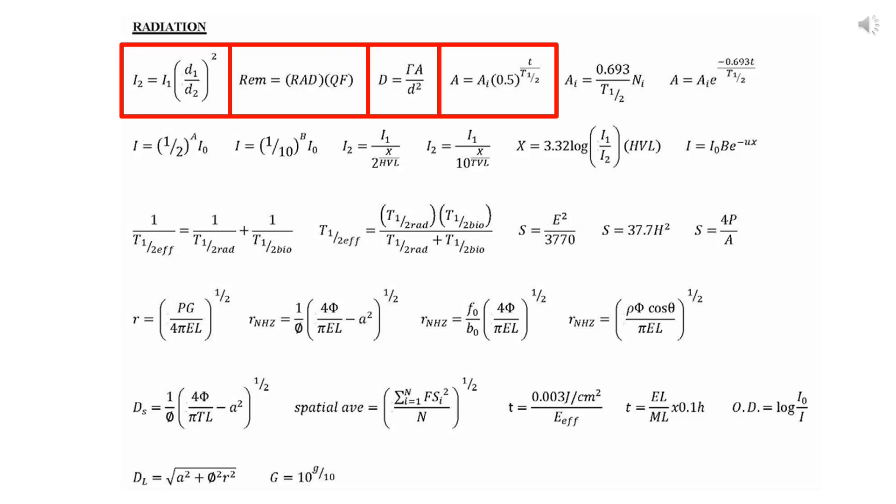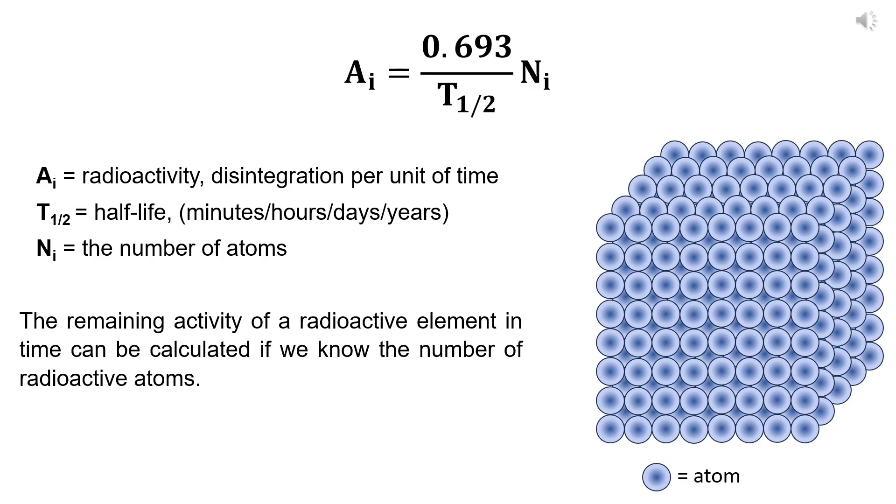Now let's go to equation number 5. We can calculate the remaining activity of a radioactive element if we know the actual number of radioactive atoms. We also need to know the decay constant, which is the half-life, and we should know the specific radioactive isotopes that we are dealing with. The number of atoms in a sample is calculated using Avogadro's number and the mass of the sample.